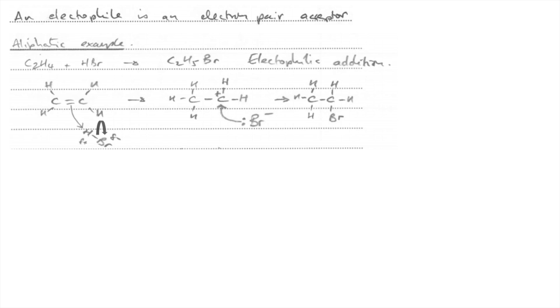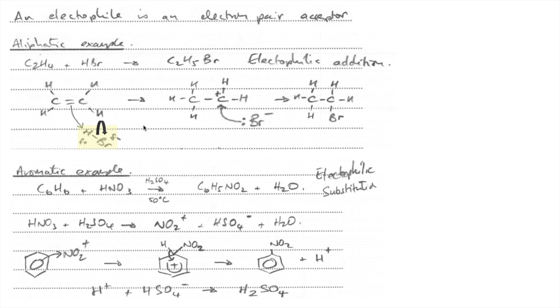For the final part we've got to explain the role of an electrophile and give examples of an aliphatic and an aromatic one. An electrophile is an electron pair acceptor. For the aliphatic example I've used the reaction between ethene and HBr — the mechanism is electrophilic addition, and HBr is the electrophile accepting the electron pair from the carbon-carbon double bond. For the aromatic example I've used the reaction of benzene with nitric acid — the mechanism is electrophilic substitution, and the electrophile is the NO₂⁺ nitronium ion.